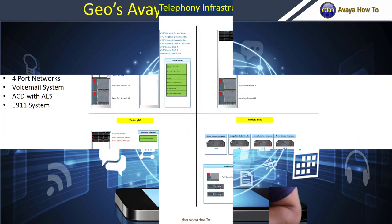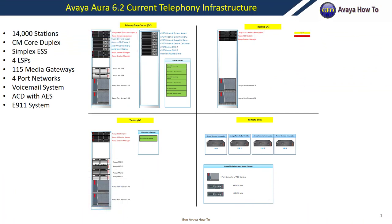The Aura 2 platform was hosted on a 100% appliance environment across three data centers, supporting a 14,000 station environment with a CM core duplex, a Simplex ESS, four LSPs, 115 media gateways, four port networks, voicemail systems, an ACD utilizing an AES server, and an E911 system.